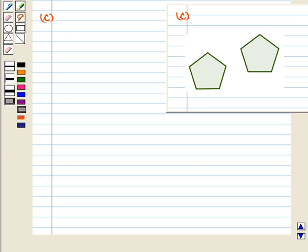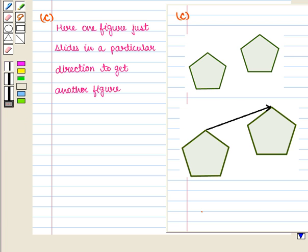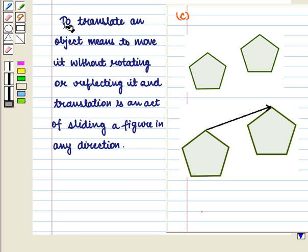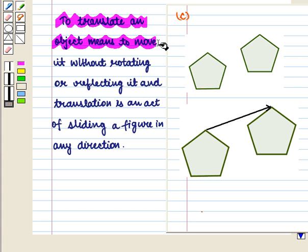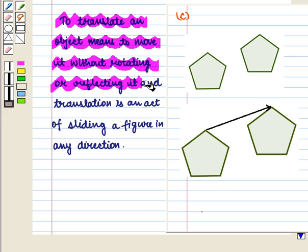Now we move on to the third part. Here neither the figures are mirror images nor is the figure rotated about a point to get another figure. Here we see that one figure just slides in a particular direction to get another figure. And we know that to translate an object means to move it without rotating or reflecting it.